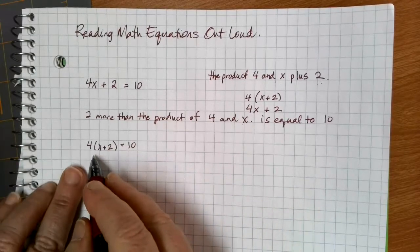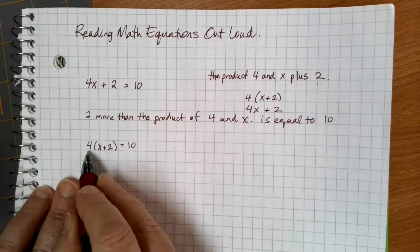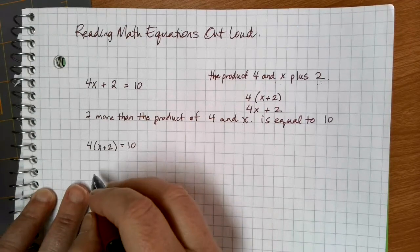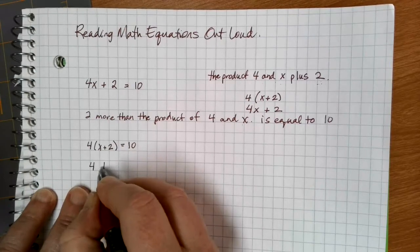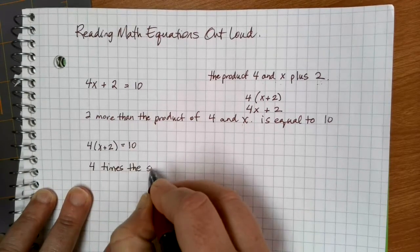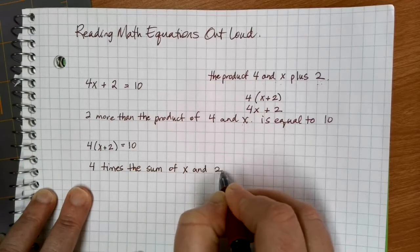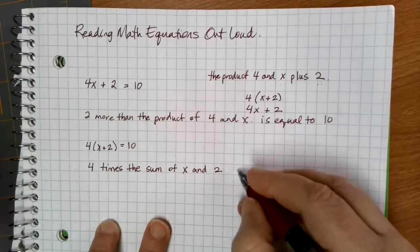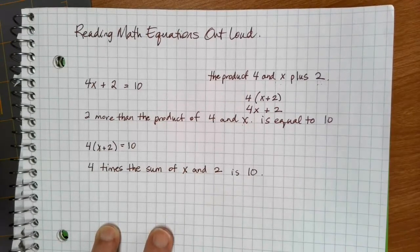A way that we could do this here is to indicate the other direction here where I want to do the x plus 2 first and then times by 4. I can do something like 4 times the sum of x and 2 is 10 or is equal to 10.